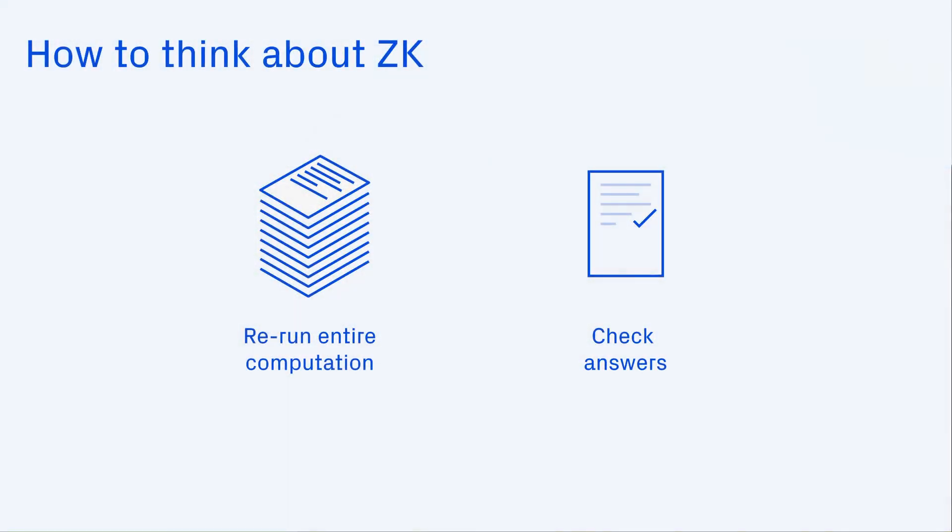Zero-knowledge, aka ZK, means proving the validity of a statement without revealing the statement itself. One mental model for thinking about why this matters is basically the difference between recomputing an entire problem set to check the answers versus using an answer key to prove that somebody got the correct answers. The latter is simply more efficient. It also creates a menu of options for what the person who solved the problem set can choose to reveal. You can basically think of ZK as the answer key — a way to prove that somebody got the correct outputs and performed the computation correctly without needing to know unnecessary information.